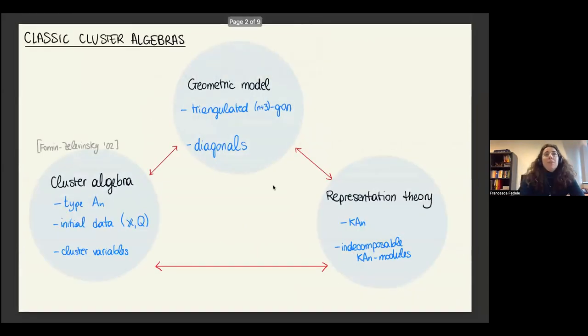Before moving into supercluster algebras, let's briefly recall something about cluster algebras. I'll be focusing on type A today. Cluster algebras were first introduced by Fomin and Zelevinsky, and they come with some initial data: an initial cluster of cluster variables X and an initial quiver Q. From here you can build the cluster variables, which are the rest of the generators of your cluster algebra through some recursive construction.